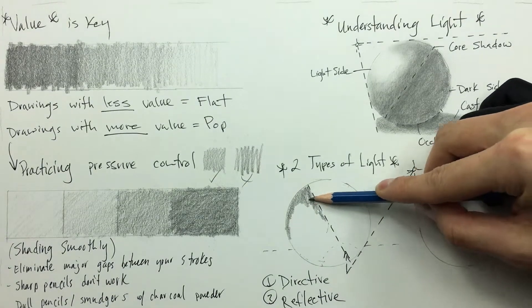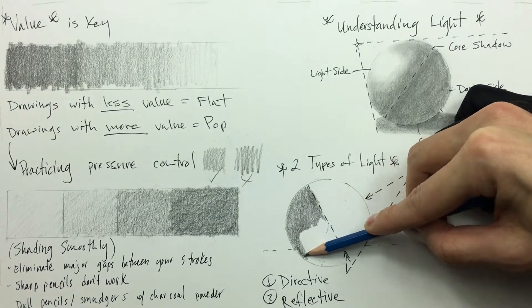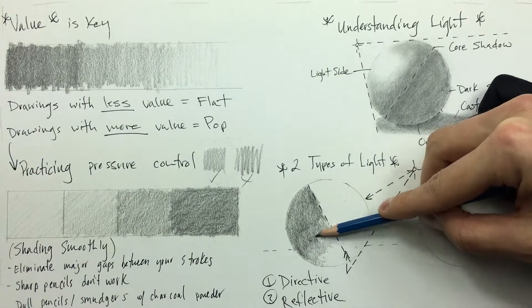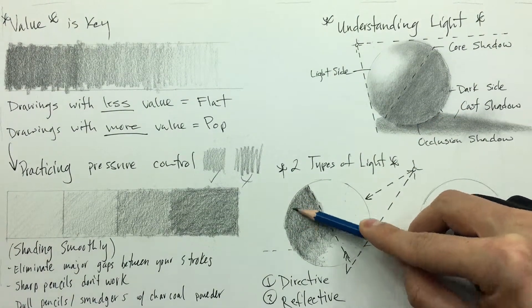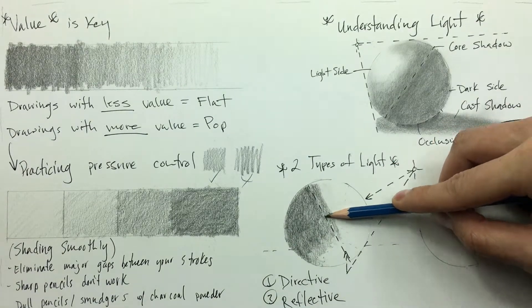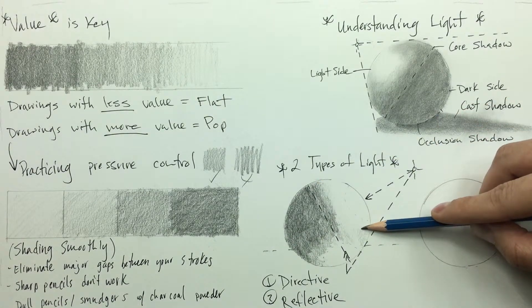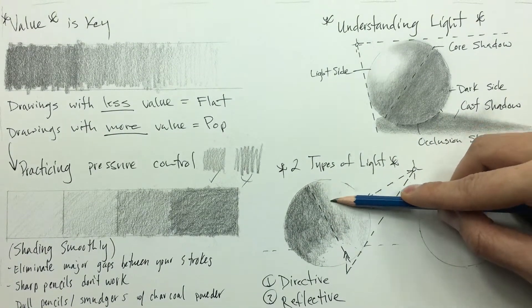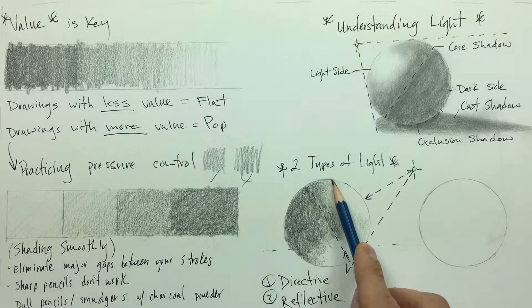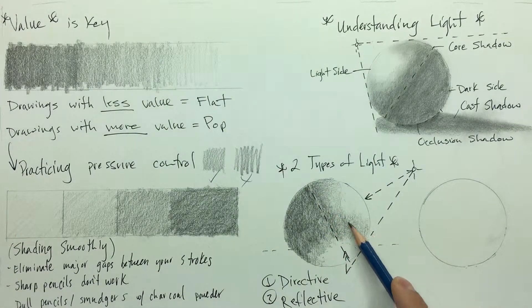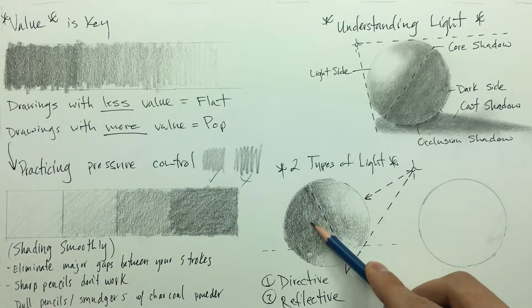Then what we're going to be doing is layering on the dark side of the sphere much like with the first. Then we're going to be starting dark on the side away from the reflective light and the direct light.